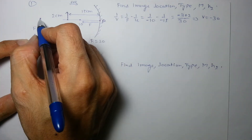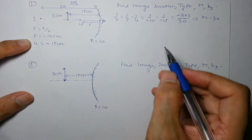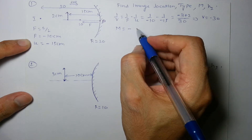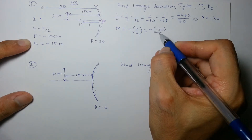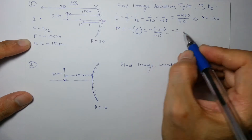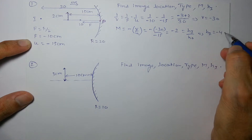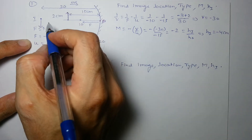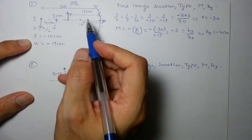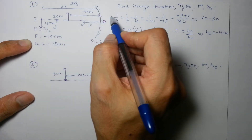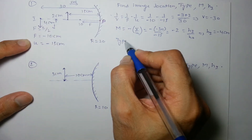v = −30 cm means the image forms 30 cm in front of the mirror, opposite to the direction of incident ray. Magnification = −v/u = −(−30)/(−15) = −2. Since hₒ = +2 cm, hᵢ = −4 cm. The image height is 4 cm and it is inverted (below principal axis). The image forms in front of the mirror, so it is a real image.